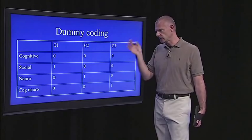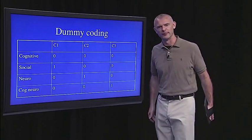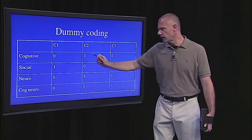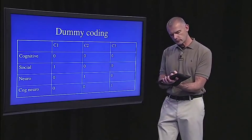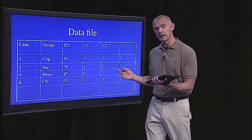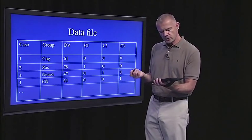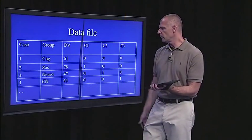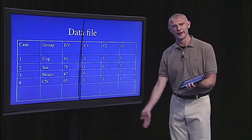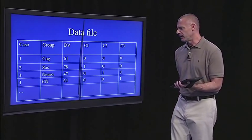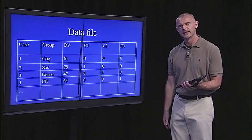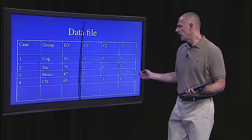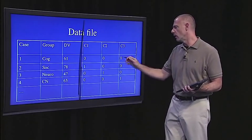The way dummy coding works is you pick one of your categories as the reference category. Since I'm in the cognitive group, I picked cognitive — very egocentric, my group's the reference group. The reference group gets zeros for all the codes. So there's code one, code two, code three, and the other groups each get a one for one of the codes. In your data frame in R, before adding the dummy codes you'd just have an ID number, what group they're in, and how many publications they have. Then we add three columns: if you're in cognitive you get zero, zero, zero; if you're in social you get one, zero, zero; and so on.